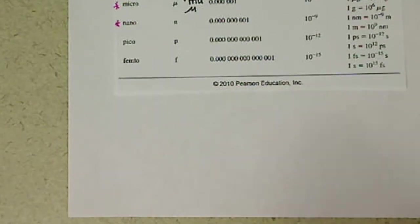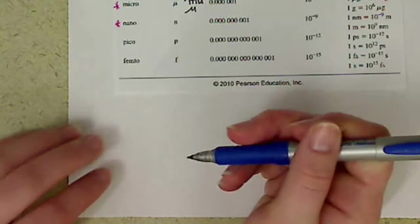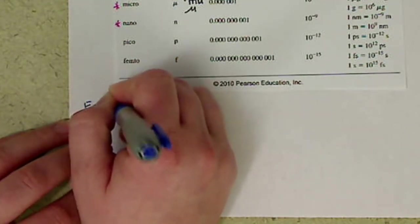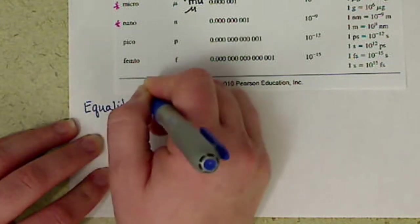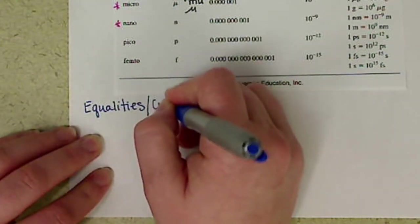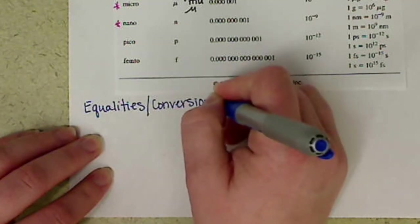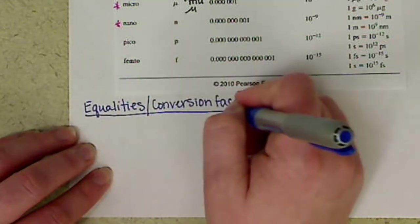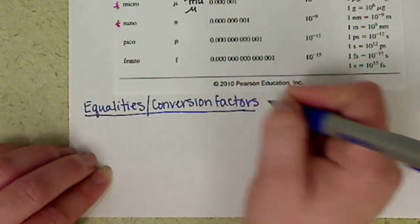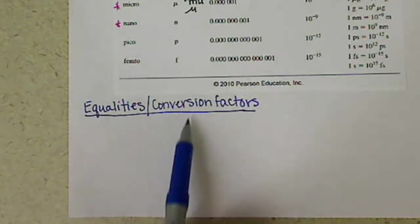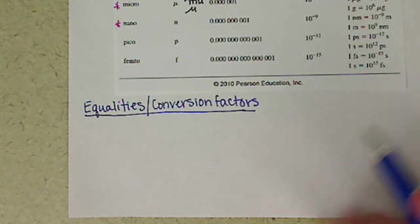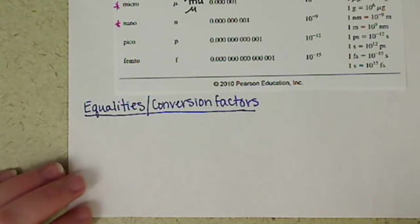So let's scroll down here. Basically now we're moving on to the equalities. And again, I combine these with conversion factors. We're basically setting these up in order to use them to convert our units, which is covered mostly in section 1.9 to actually do those calculations.